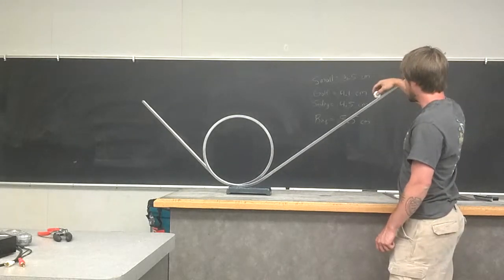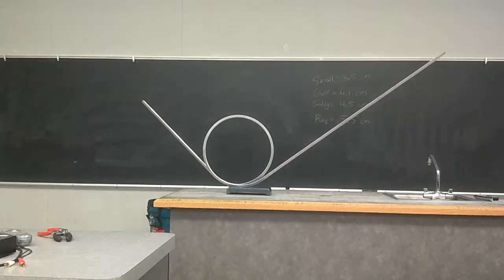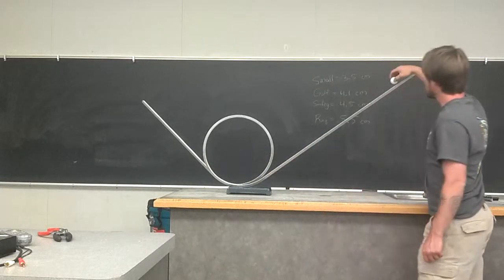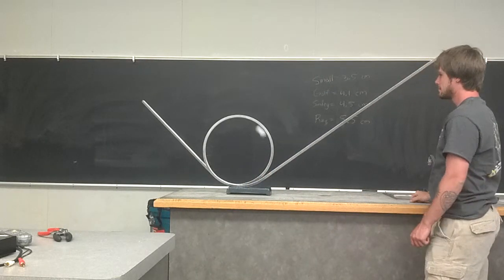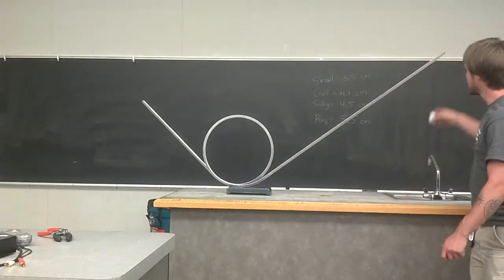Now the golf ball. We'll start on the one-third mark. Did not make it. We'll try the halfway mark. Made it through the loop, but it slipped.